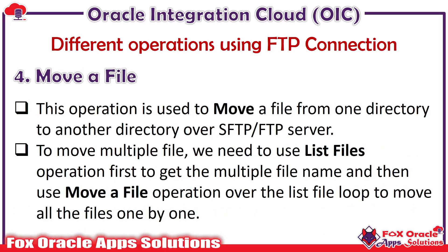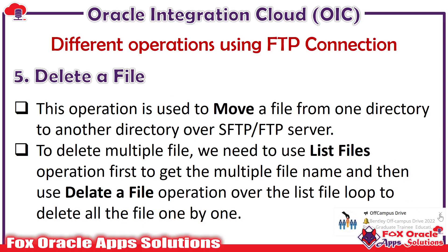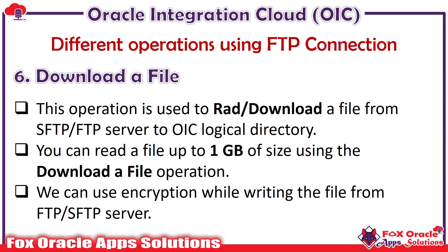The move a file operation is used to move a file from one directory to another directory on the SFTP server only — you cannot move a file that is available in the OIC local directory. A common use case is when we have read a file from the source directory and now need to archive it on the SFTP server. The delete a file operation is similar but instead of moving, it deletes the file from a particular directory on the SFTP server.